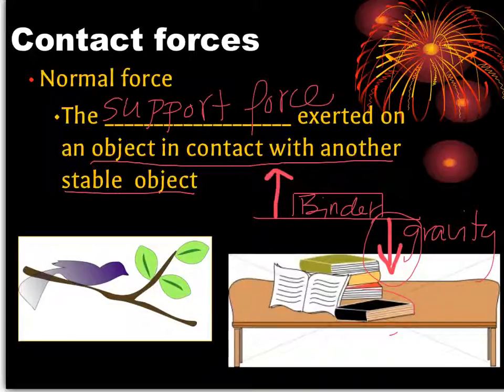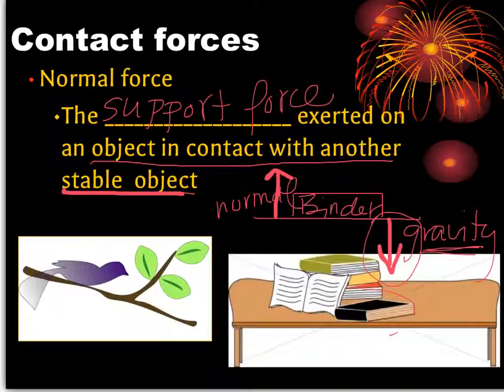The normal force is coming from the stable object, so in this case, the table. We call this normal because it's always around - it's there to counteract that gravitational force so things stay balanced. We see another example of normal force here: the bird. Gravity is keeping it on the branch, but the branch is then pushing back with a normal force to the bird.